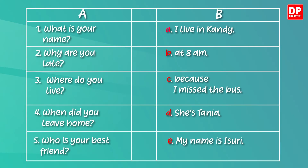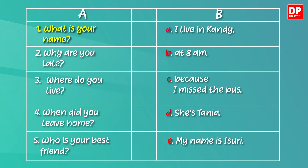Okay children, as the questions are very simple and familiar I'm sure it was easy. Let's check your answers. Let's read the first one. Here the question is: what is your name? As the question says 'your name' you have to start with 'my name'. So it should be E — my name is Isuri.